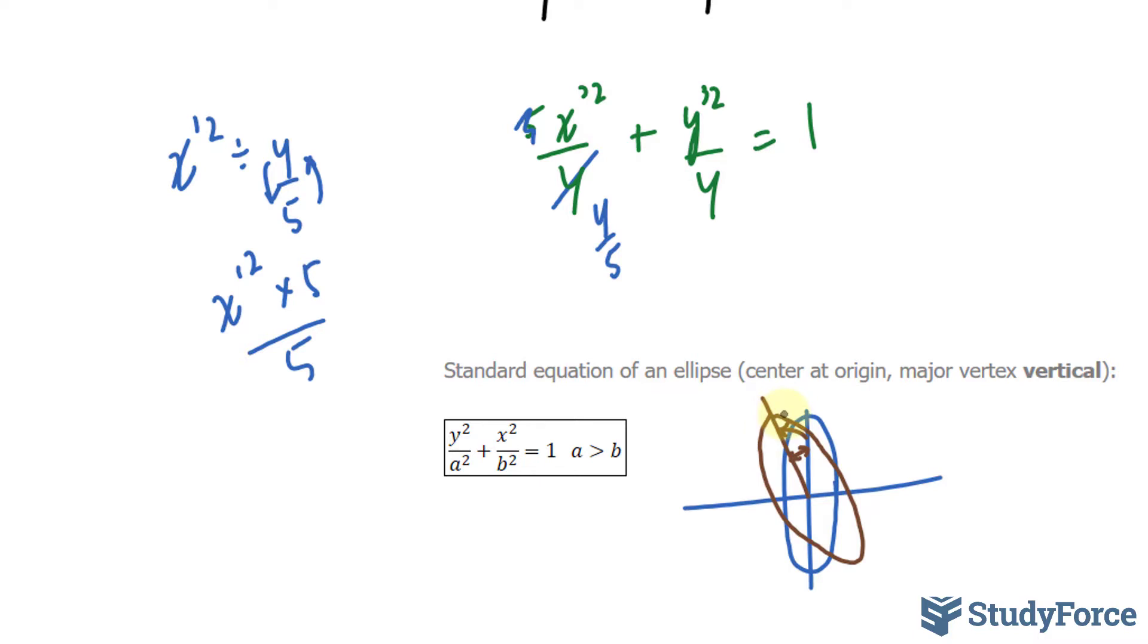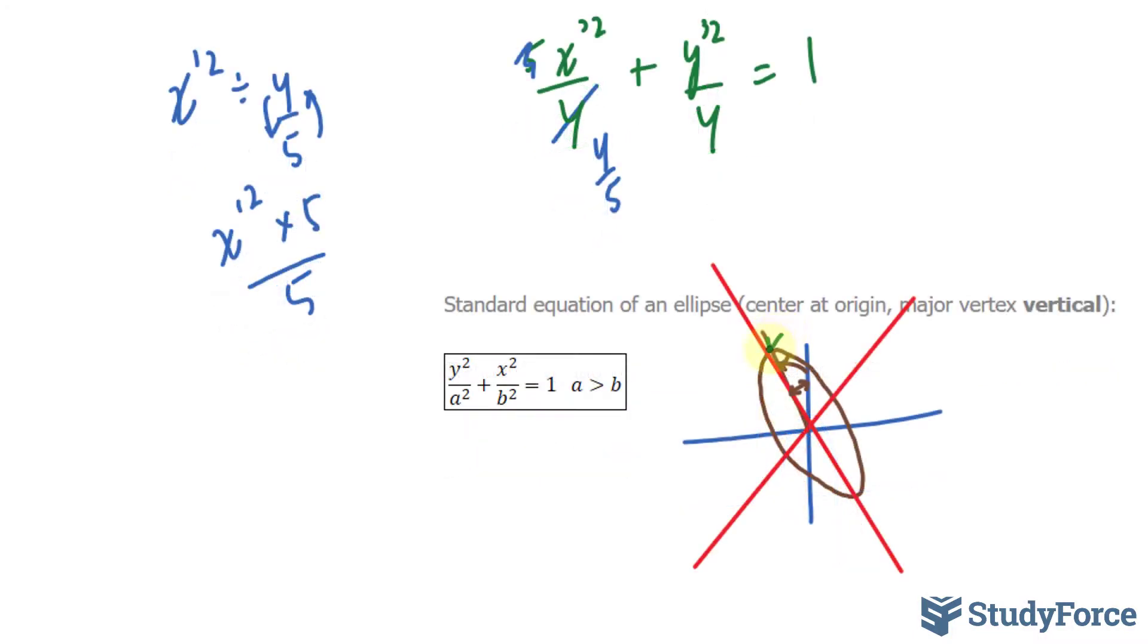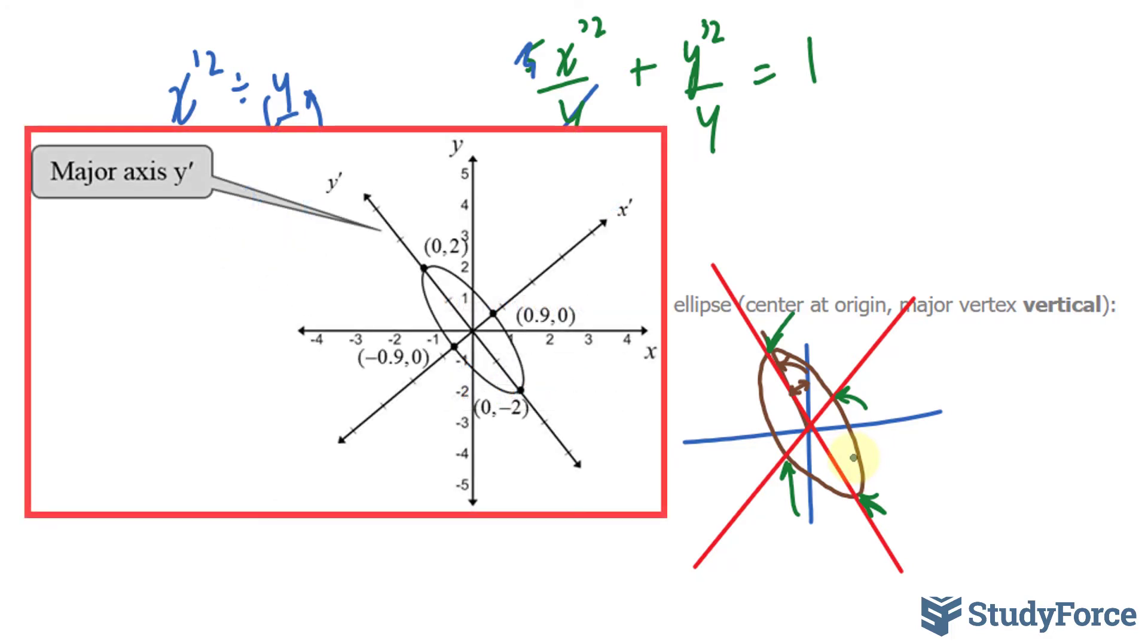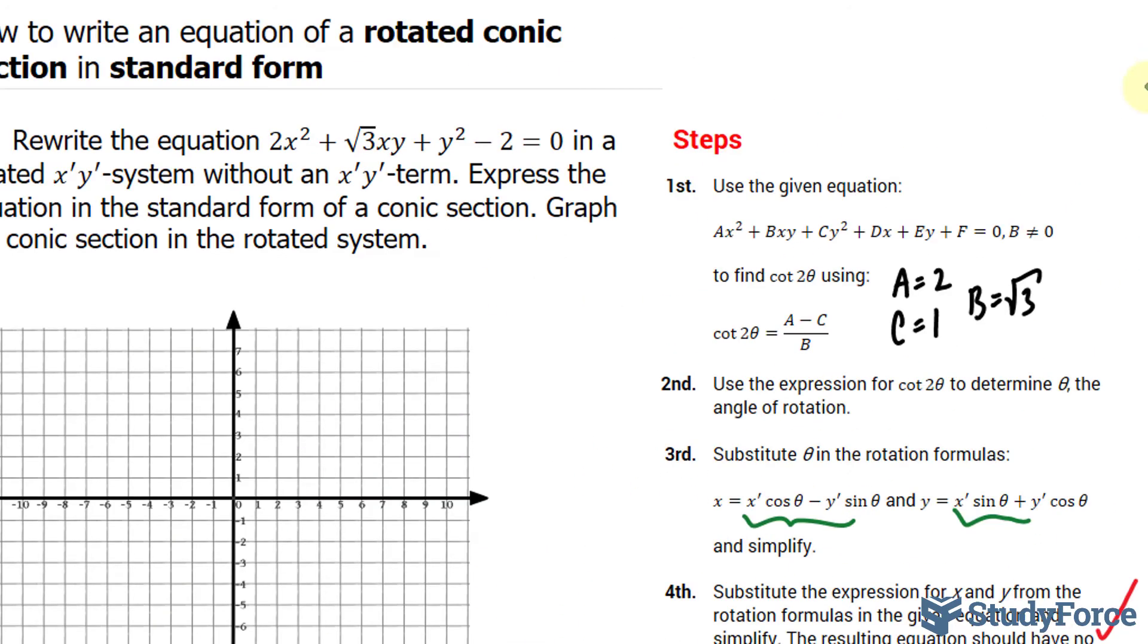So if you wanted to be more accurate, you could actually find out what this point is and these points using the techniques that have been taught in previous videos. An actual graph of this equation is shown on your screen. And there you have it. That is how to write an equation of a rotated conic section in standard form.